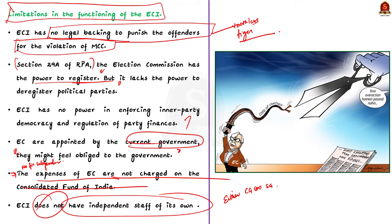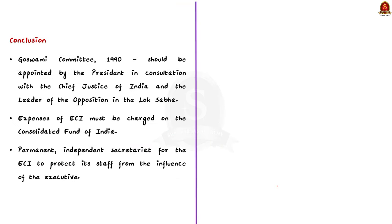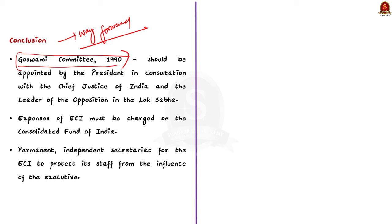Now we have addressed both parts of the question. For the conclusion, in questions like this, your conclusion can be a way-forward approach — mentioning steps to ensure the autonomy of ECI. Firstly, the appointment process should be made transparent. Here you can quote the suggestions of the Goswami Committee 1990, which suggested that the CEC should be appointed by the President in consultation with the Chief Justice of India and the Leader of Opposition in Lok Sabha. The rest of the Election Commission should be appointed in consultation with the Chief Election Commissioner.